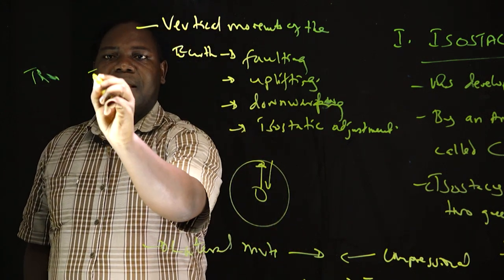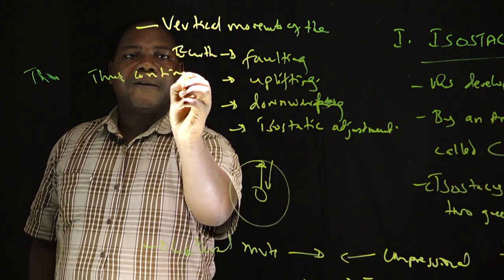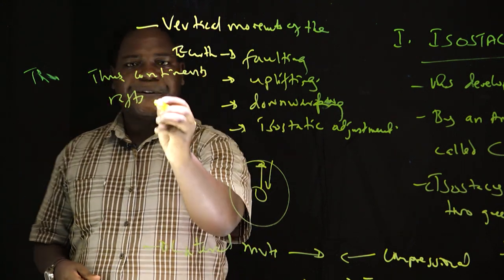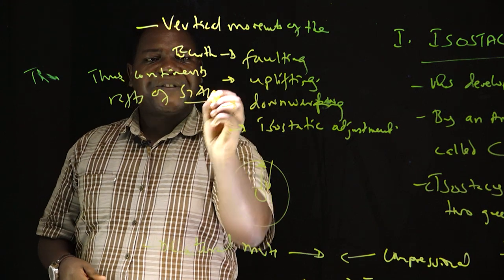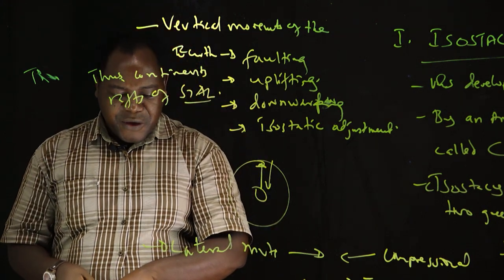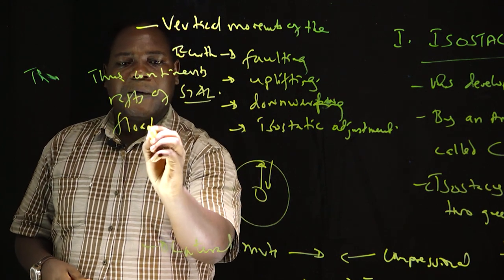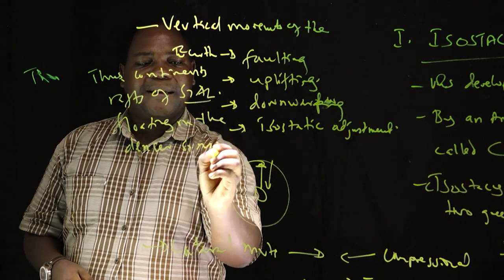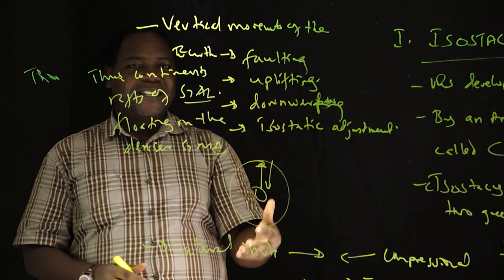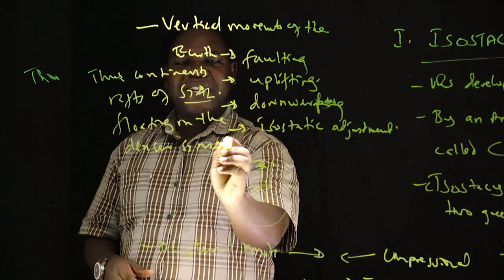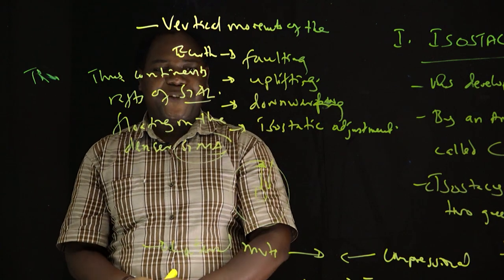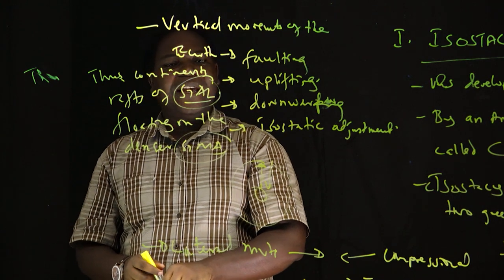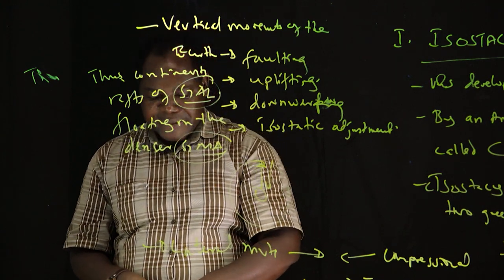Continents are like rafts — rafts of sial, meaning silica and aluminum, floating on the denser sima. When you see the ocean, the ocean floor is made of silica and magnesium, that is why it is a depression. When you see a mountain, that is the area of less dense material — silica and aluminum. The mountains are made of silica and aluminum, while the ocean floor is made of silica and magnesium.